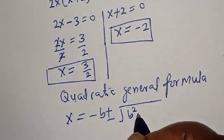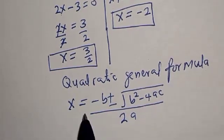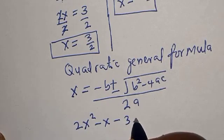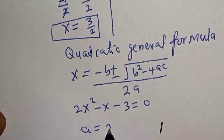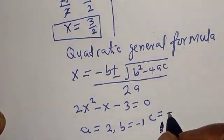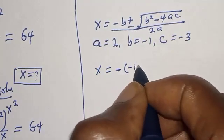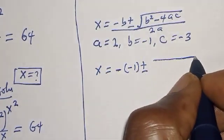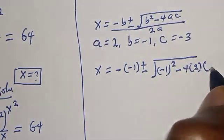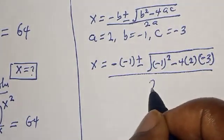The quadratic general formula gives us s equals minus B plus or minus square root of B squared minus 4AC, over 2A. From the equation 2s squared minus s minus 3 equals 0: A equals 2, B equals minus 1, and C equals minus 3. Substituting, we have s equals minus times minus 1, plus or minus square root of minus 1 squared minus 4 times 2 times minus 3, over 2 times 2.